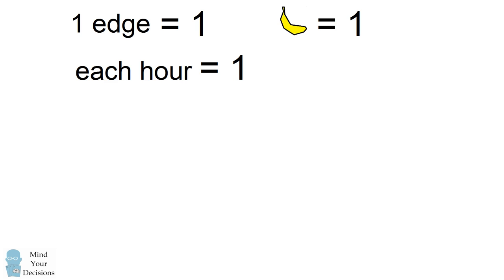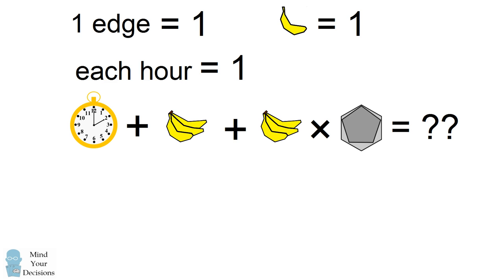We now have the information needed to evaluate the last line. We start out with a clock that shows 2 o'clock. Since each hour is equal to 1, we can assign a value of 2 here. We now have a bunch of bananas where each bunch has 3 bananas. Since each banana is equal to 1, we can say each bunch has a value of 3.